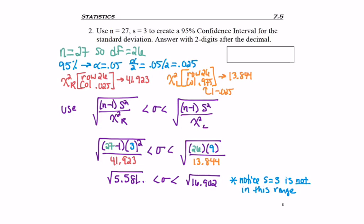Because you'll notice that 3 is not in this range. And even though I'm not doing my point estimate plus or minus a margin of error, my point estimate of s, my sample standard deviation, still has to be in the range, and 3, in this case, is not.